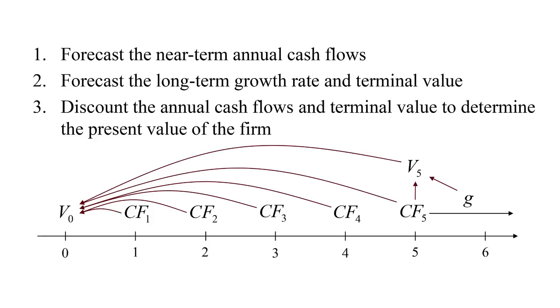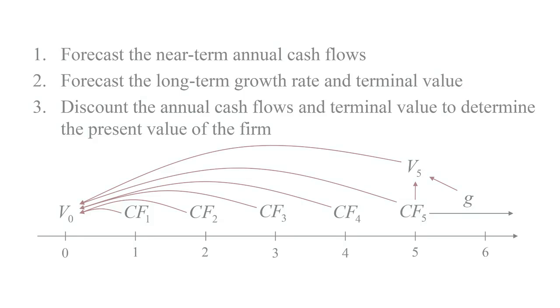We have the cash flows in years one through five, and then a value at time five. This value at time five is what we call the terminal value, and it reflects those future cash flows beyond year five.